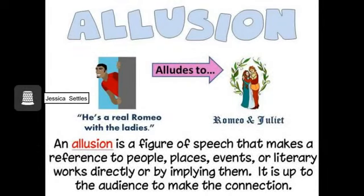Allusions are references to people, places, events, or literary works in a piece of literature. I think the best way to explain this one is to watch Family Guy — all the characters are always alluding to other things when they say 'this was like that time when we did this or that.' This image is of Brian alluding to Snoopy from the Peanuts.